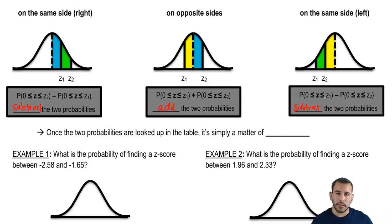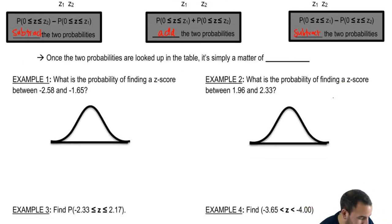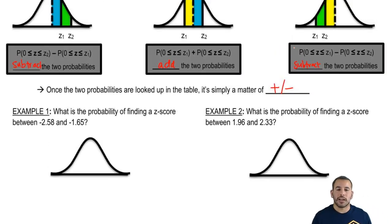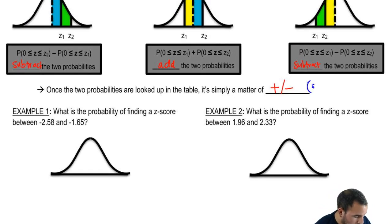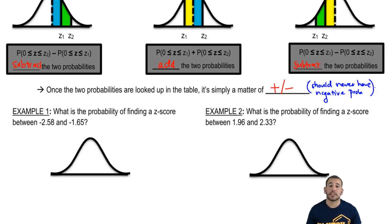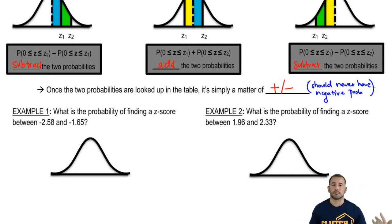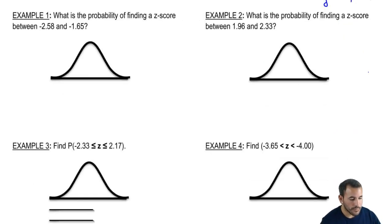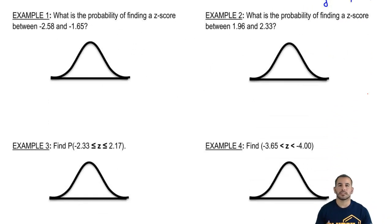What I mean is: look it up in the z-table, find the probability, and then do an addition or subtraction. Once the two probabilities are looked up in the table, it's simply a matter of plus or minus. And even if you do the subtraction wrong — say you subtracted the smaller one minus the bigger one — you should never end up with a negative probability. Probabilities by nature are never going to be negative; they're always between zero and one. So if you messed up, you'll get a negative. You'll know to switch them, and that's about it.